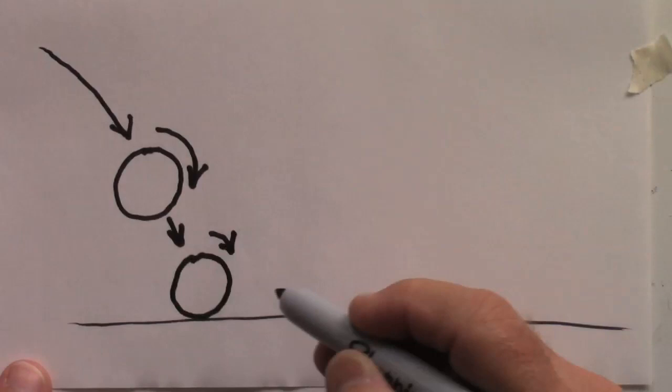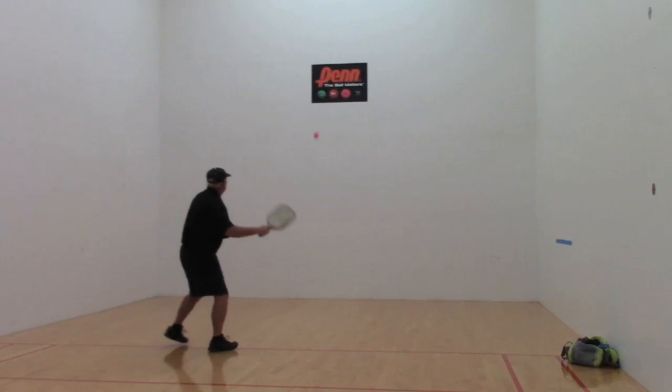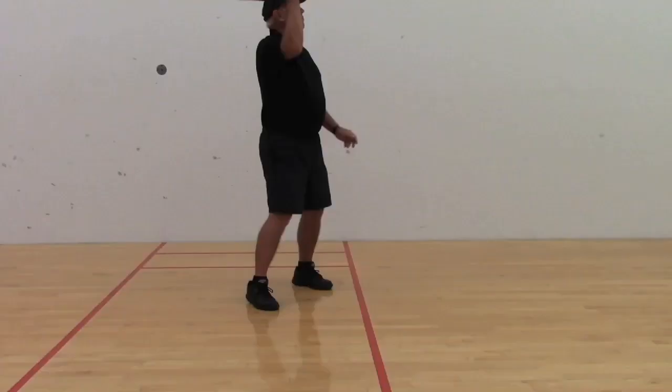Topspin will help keep the ball in bounds, and it will cause the ball to kick deep. A great way to practice the topspin lob is with a gymnasium wall. Try to consistently hit a target about 12 feet high. You have to perfect this brushing stroke and groove it into muscle memory. A few practice sessions can help you acquire this very valuable shot.